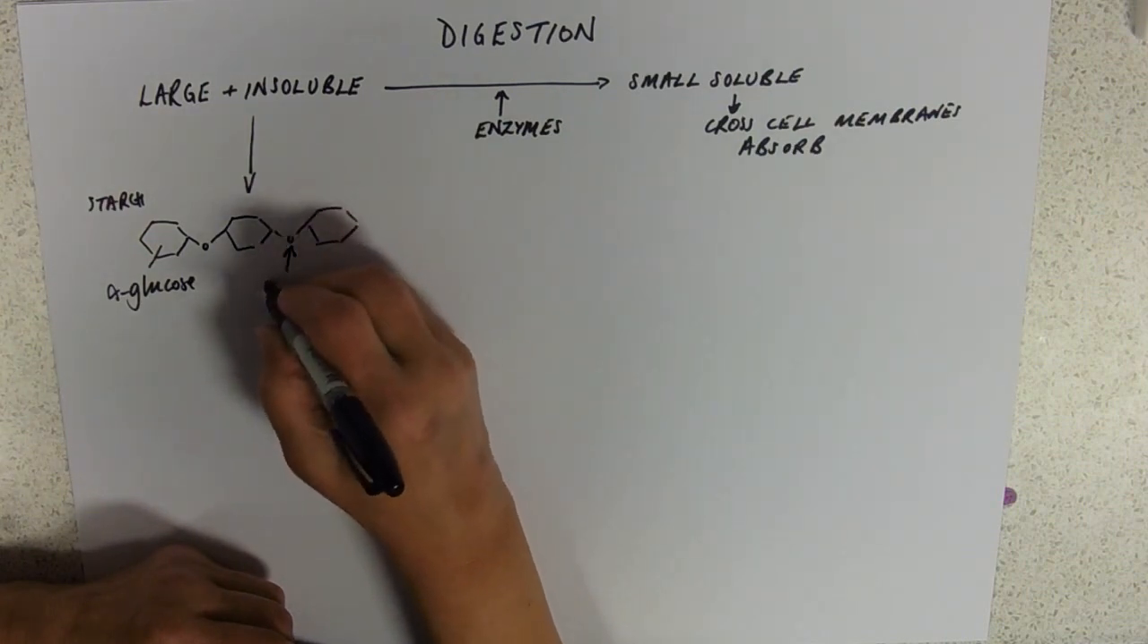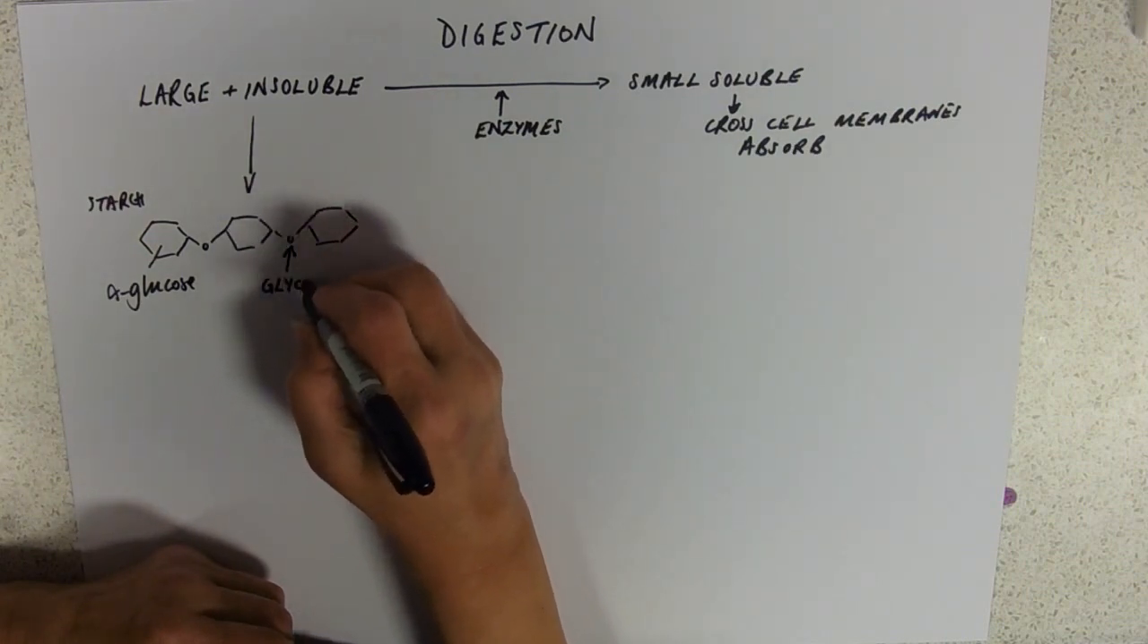So we've got starch, and of course the bonds that we need to break to release the smaller soluble molecules are glycosidic links. That's, you know, if you think about all our staple foodstuffs, they're pretty much starch - rice and wheat and potatoes.